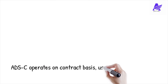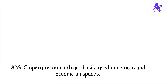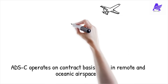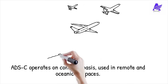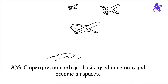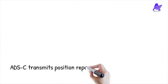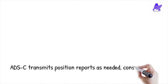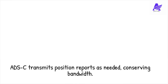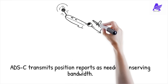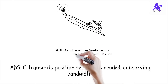ADS-C, on the other hand, works differently. Instead of continuously broadcasting flight data, it operates on a contract basis between the aircraft and ATC. This system is used primarily in oceanic and remote airspace, where ADS-B and radar are unavailable. With ADS-C, the aircraft transmits position reports at predetermined time intervals, during specific flight events, or when requested by ATC.